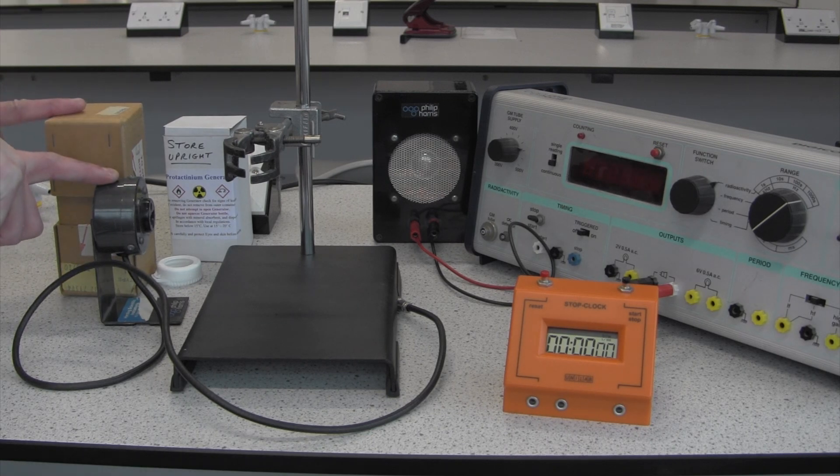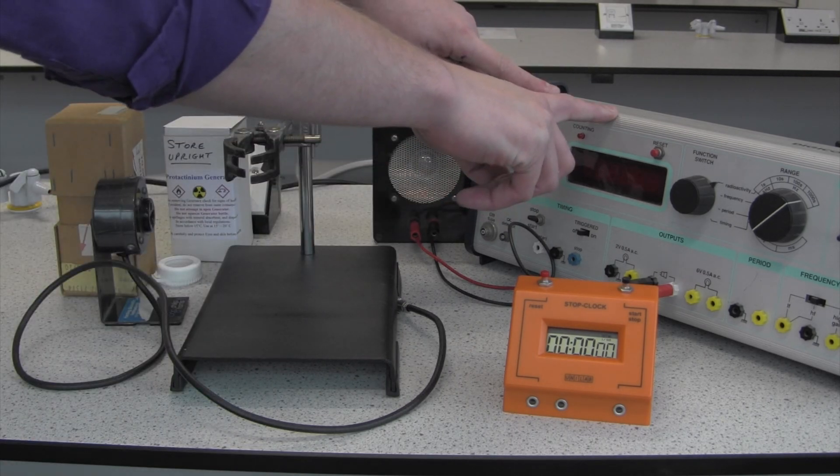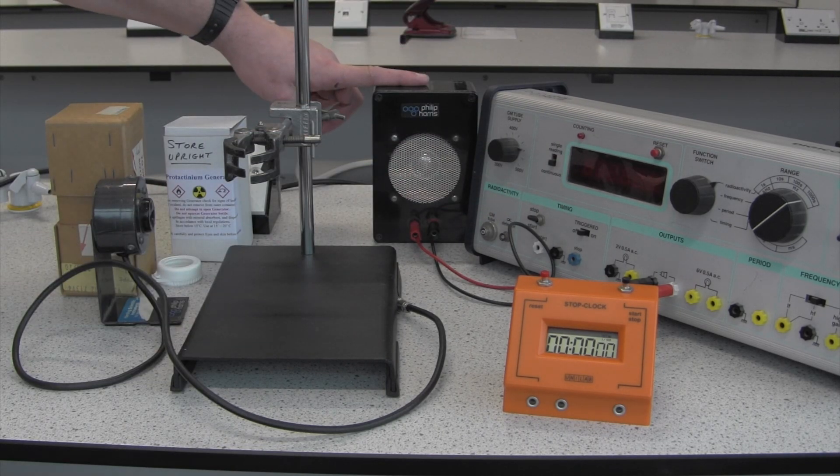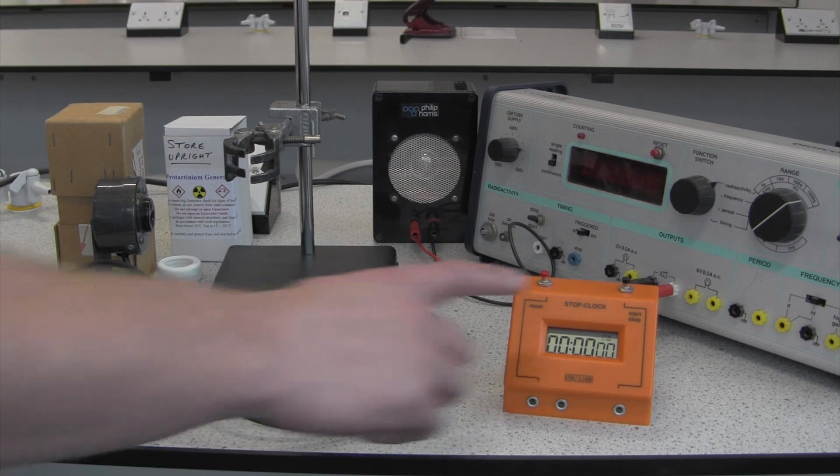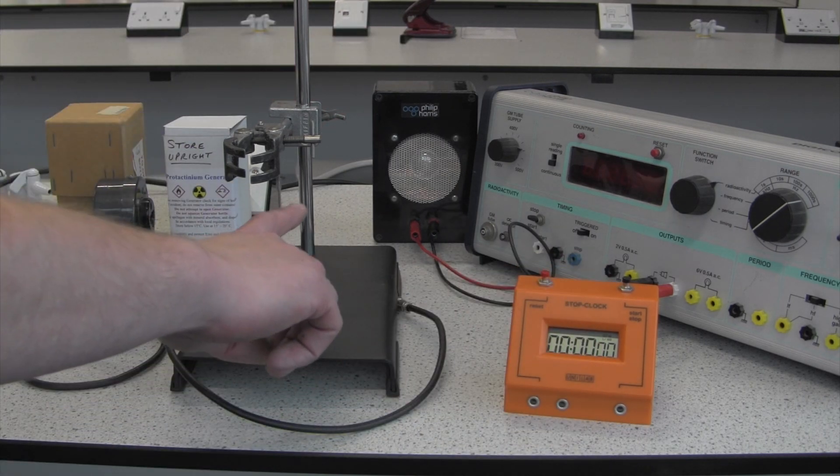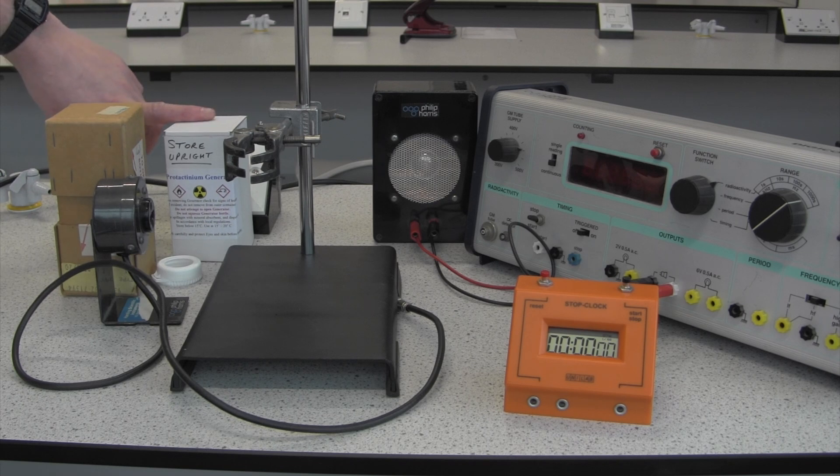These two bits here are the Geiger-Muller tube. Over here is our Geiger counter. We've got a microphone attached to the Geiger counter just so that we've got an audible idea of the decay. We've got a stop clock, a clamp stand, and our protactinium generator.